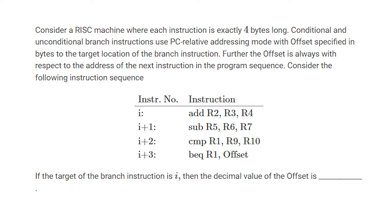Consider the following instruction sequence. Then you are given some code and they are asking if target of branch instruction is i, then the decimal value of offset is.